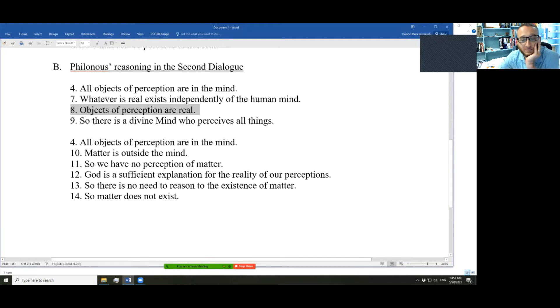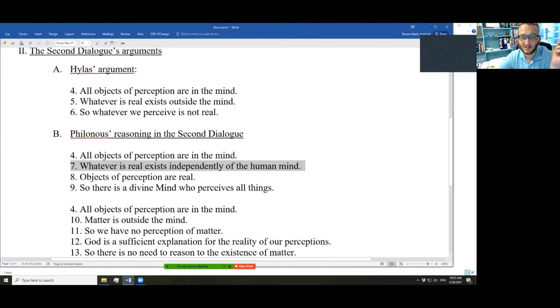So, he thinks of himself as a common sense philosopher of sorts. Objects of perception are real. And what we perceive is real. And what we perceive is in the mind. And what is real exists not outside the mind, as Hylas would say, but independently of the human mind. In the human mind, but independently of the human mind. And accordingly, there must be a God. God, the divine mind that perceives all things, must exist.